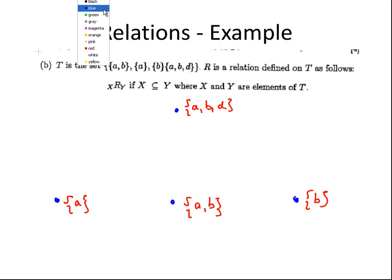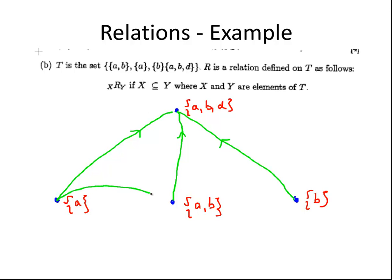Now, let's put in the directed edges. So {a} is a subset of {a,b,d}. {a,b} is a subset of {a,b,d}. And {b} is a subset of {a,b,d}. So those are a couple of our relations. {a} is also a subset of {a,b}. As is {b}, that's a subset of {a,b}. So two more directed edges there.